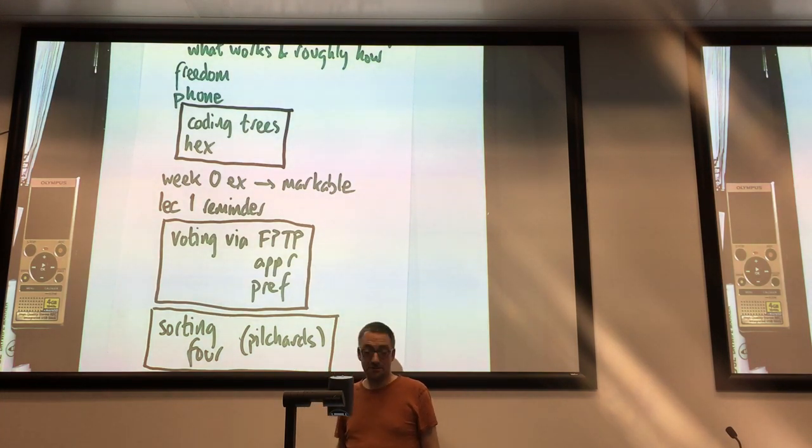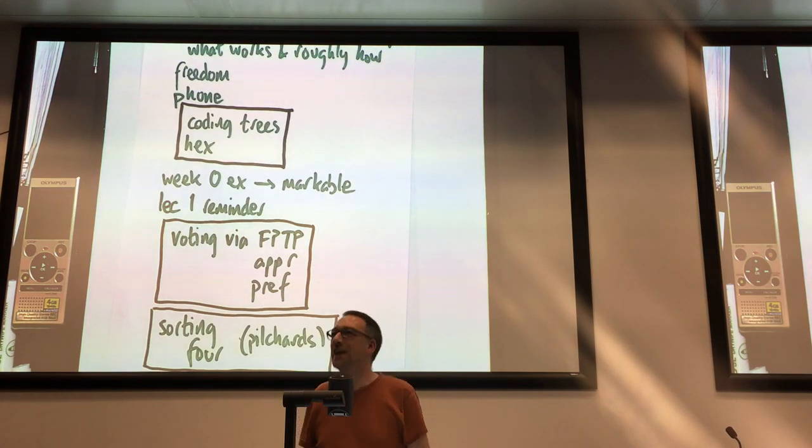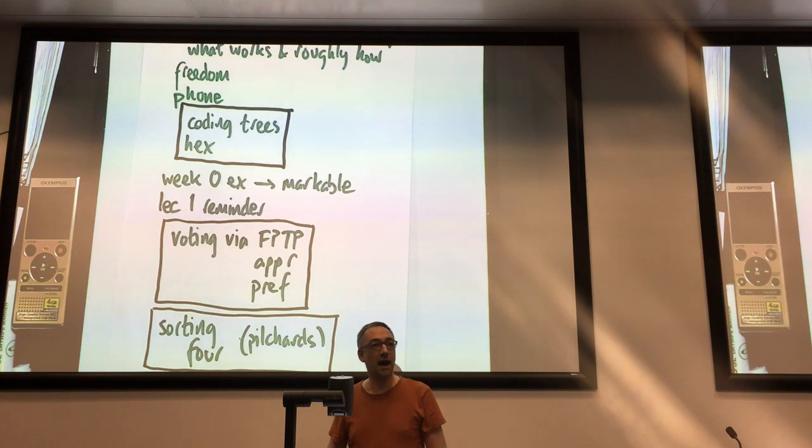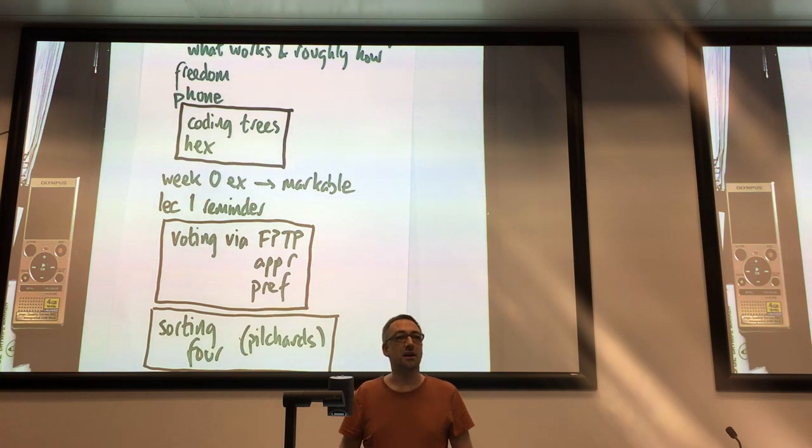And you can choose to vote for all of the candidates, which doesn't actually make the blindest bit of difference, but might feel good. Or you can choose that you approve of some candidates and disapprove of others. So in this voting system, how many bits do you have for seven candidates?